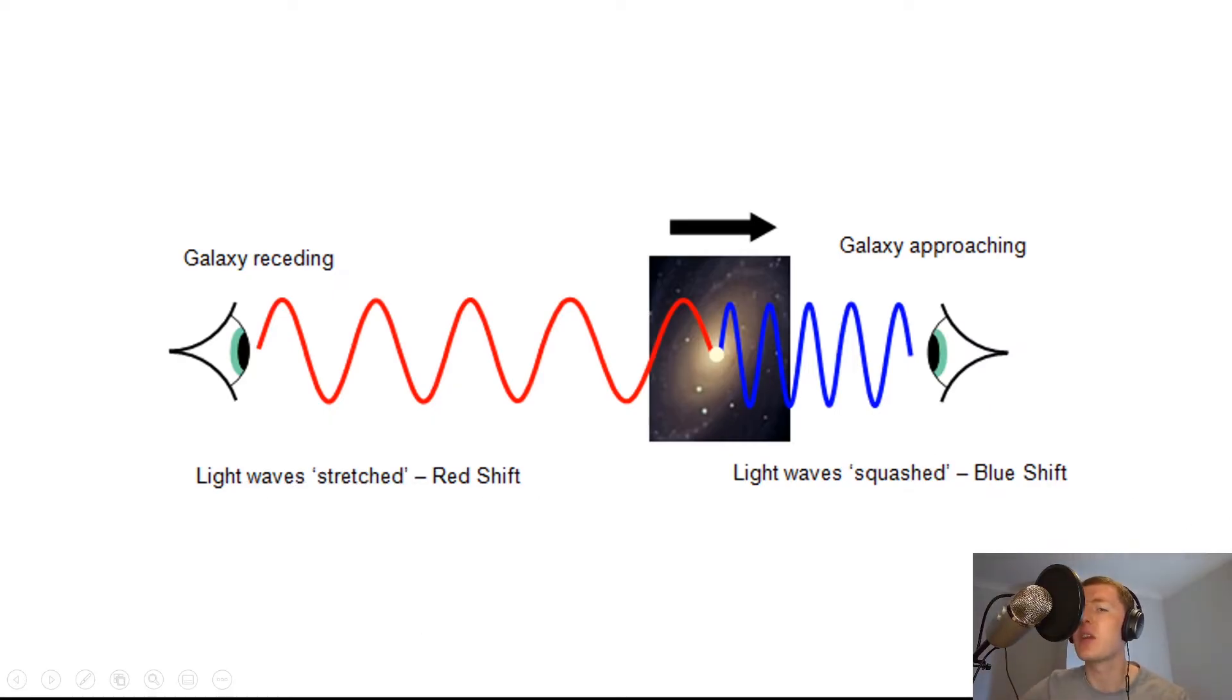If however the galaxy was moving towards you and approaching you, then that means that the light waves from the galaxy would be decreasing in wavelength, i.e. bunching up. Just like we saw in the theory video for the Doppler effect, where the waves bunch up when you're moving towards an observer.